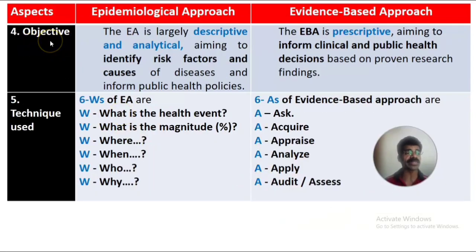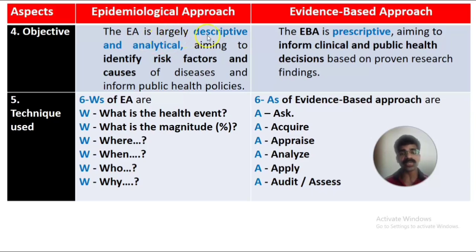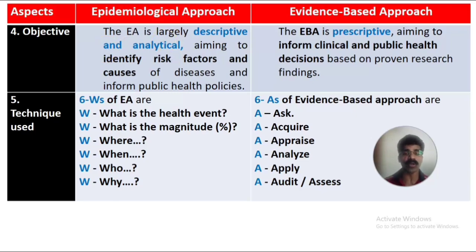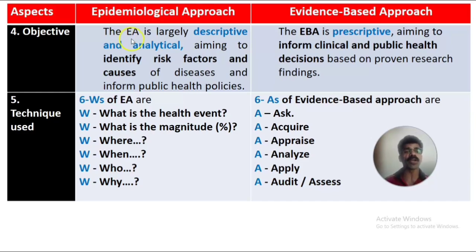The fourth aspect is objectives. In the epidemiological approach, the objective is largely descriptive and analytical in nature. Descriptive study identifies disease occurrence, distribution, or patterns according to person, place, and time. Analytical study goes further to examine the relationship between etiology and the problem — whether there is any association between risk factors and the outcome of the disease.